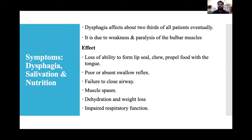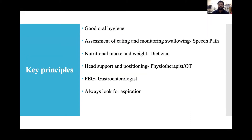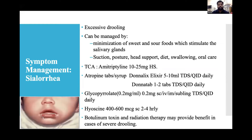Dysphagia affects about two-thirds of all ALS patients, due to weakness and paralysis of bulbar muscles, causing loss of ability to form bolus, chew, poor swallowing reflex, failure to close the airway, muscle spasm, dehydration, weight loss, and impaired respiratory function. Key principles: good oral hygiene, assessment and monitoring of swallowing, nutritional intake, and weight. Head support and positioning — mainly left lateral — and gastroenterologist referral for percutaneous endoscopic gastrostomy. Watch for aspiration.